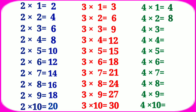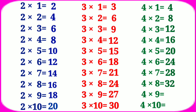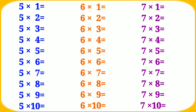Table of 4: 4 ones are 4, 4 twos are 8, 4 threes are 12, 4 fours are 16, 4 fives are 20, 4 sixes are 24, 4 sevens are 28, 4 eights are 32, 4 nines are 36, 4 tens are 40. Table of 5: 5 ones are 5, 5 twos are 10, 5 threes are 15, 5 fours are 20, 5 fives are 25.